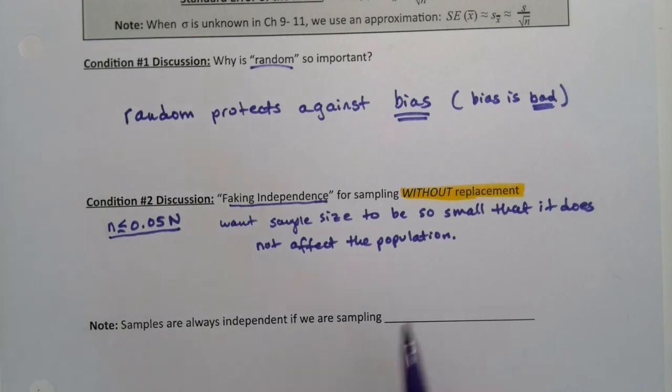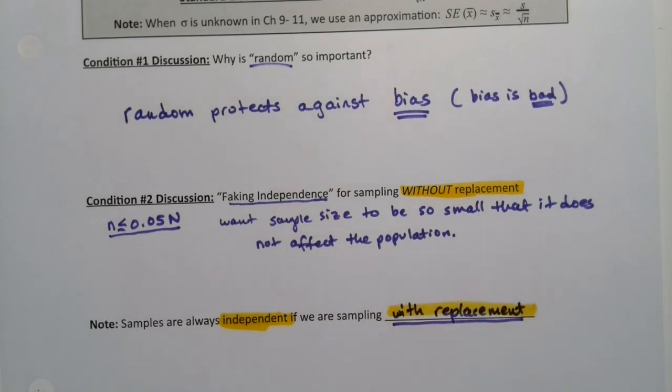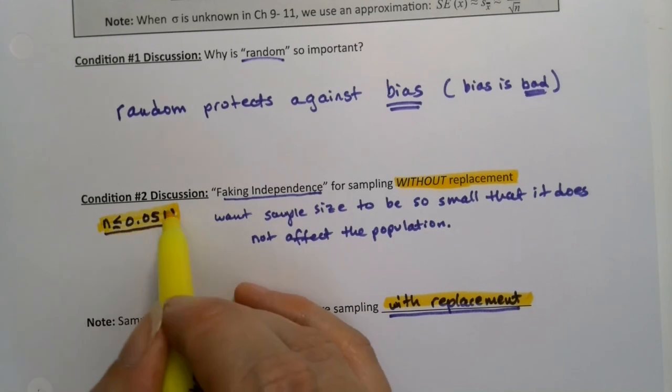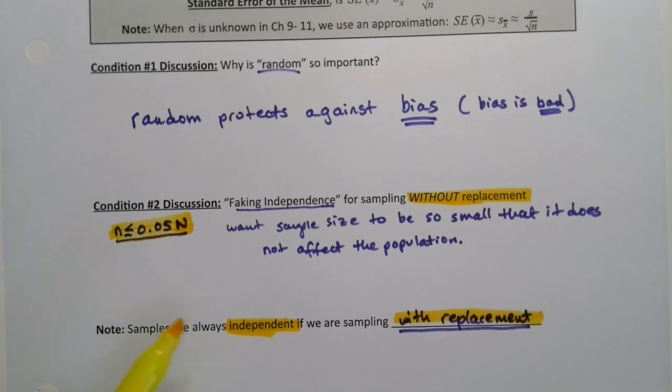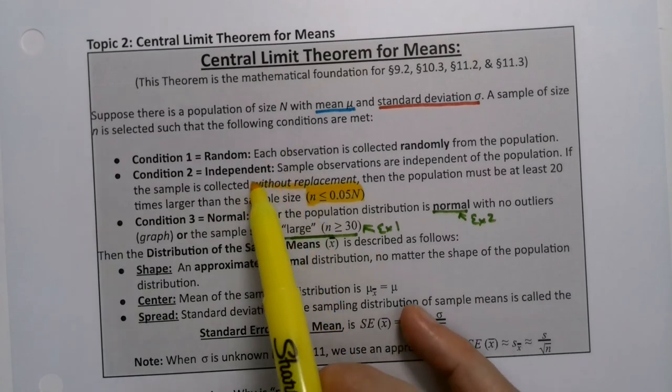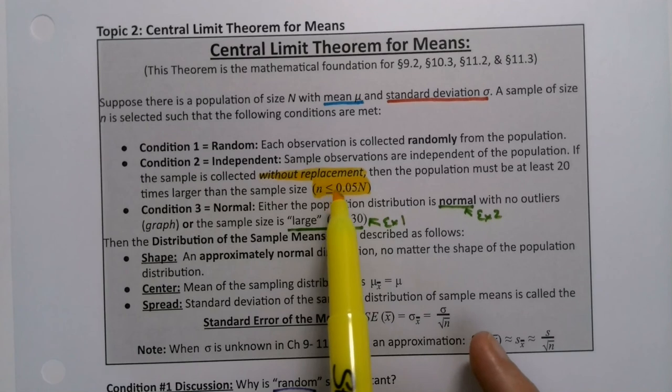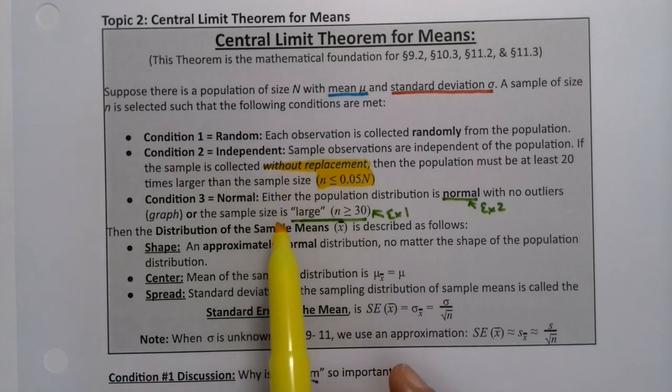Now, the only other thing to notice is that if you're sampling with replacement, if you always put everybody's phone number back in the bin, say you're doing a phone poll or something like that, then that's automatically independent. That's independent no matter what. If you sample with replacement, you're good. It's if you sample without replacement, you have to be less than 5% of the population. You have to be small enough that nobody will notice you're calling. Now, if you have those three things, if you have those conditions of random, independent and normal and independent is kind of faking it most of the time, we just want to kind of fake our way through it. That n is less than 5% of capital N, the population size.